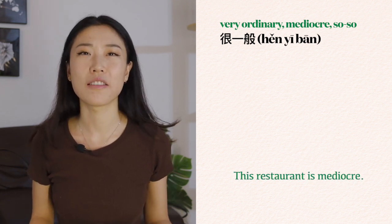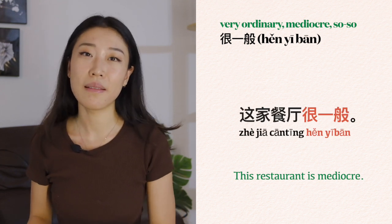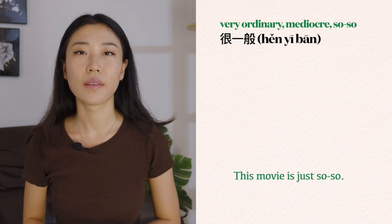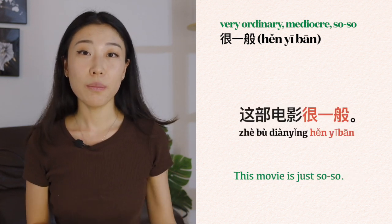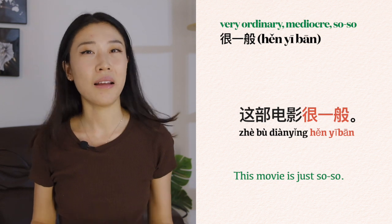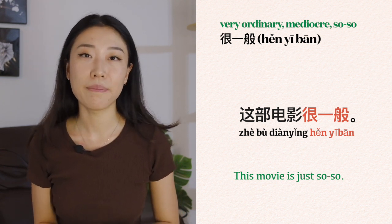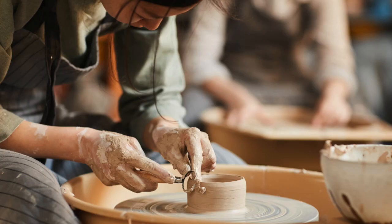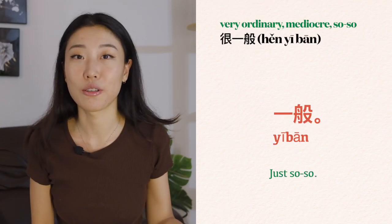For example: 这家餐厅很一般 — This restaurant is mediocre. And 这部电影很一般 — This movie is just so-so. You can also use it alone. If someone asks 'How was the pottery class?' you can say 一般 — not good, not bad, just so-so.